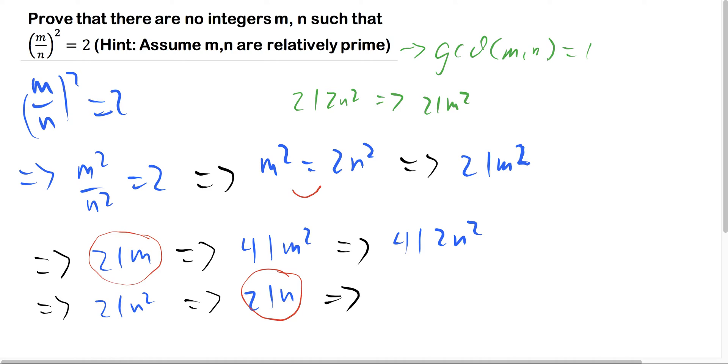then the GCD of m and n is in fact 2, which is a contradiction, and it's the opposite of what we have here.